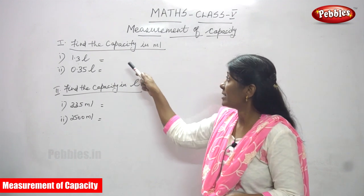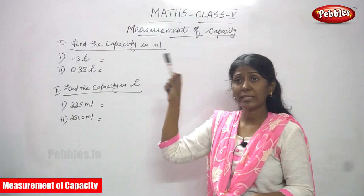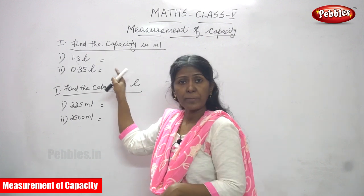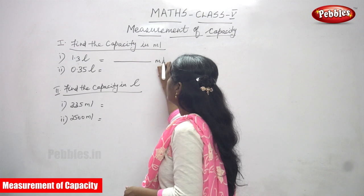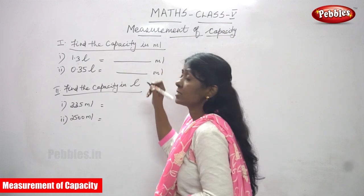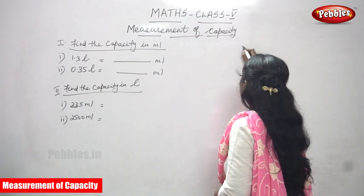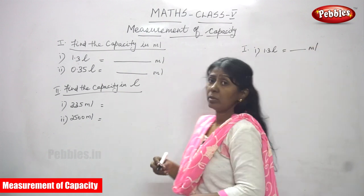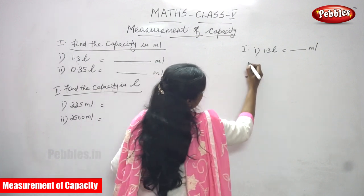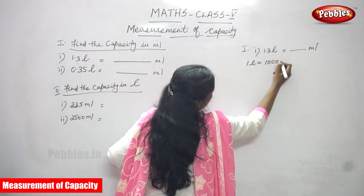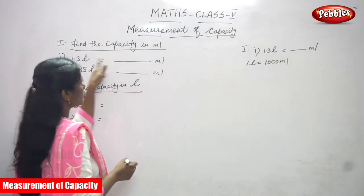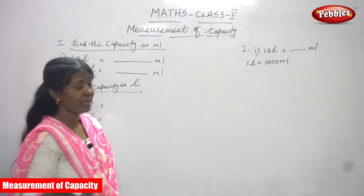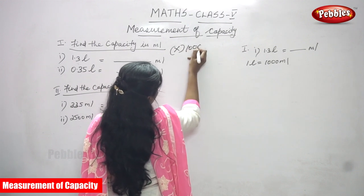Now we are going to solve the problems. The first one is: find the capacity in milliliters. The question is given in liters, so you have to convert into milliliters. The first question is 1.3 liters. One liter is equal to 1000 ml. This is liter to milliliter — bigger unit to smaller unit — so bigger to smaller means you have to multiply by 1000.